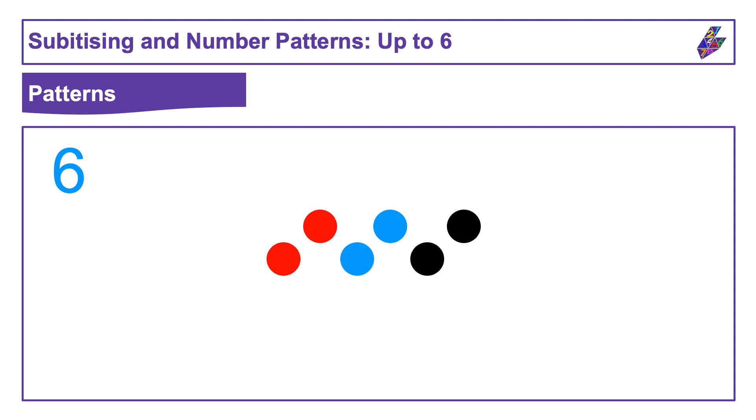Or perhaps you saw the six made up from three lots of two: two, two, and two. Maybe you saw the six made up from two lots of three. This is also known as double three. Three on the top and three on the bottom.